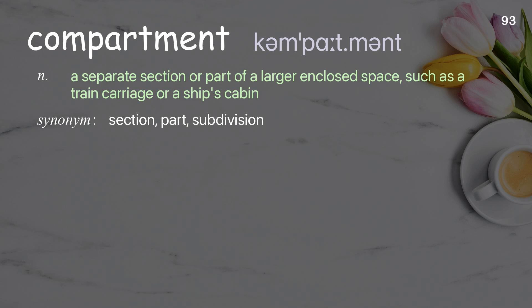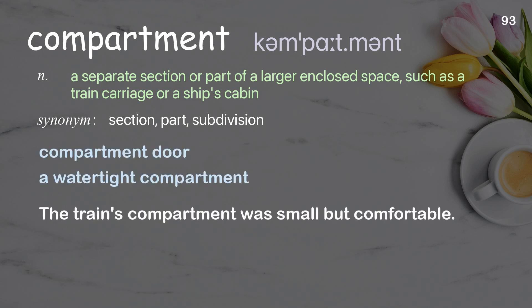Compartment: a separate section or part of a larger enclosed space, such as a train carriage or a ship's cabin. Examples: compartment door, a watertight compartment. The train's compartment was small, but comfortable.